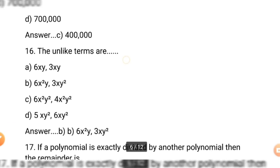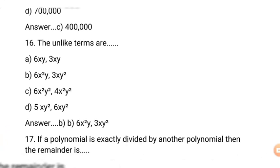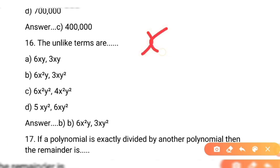Question number 16: the unlike terms are — which ones are unlike? First option: 6xy, 3xy. Second option: 6x²y, 3xy². Third option: 6x²y², 4x²y². Fourth option: 5xy², 6xy². If we talk about unlike terms — unlike terms woh hain jahan variables ke exponents alag hon. Hum dono terms mein x aur y ki powers compare karein ge.